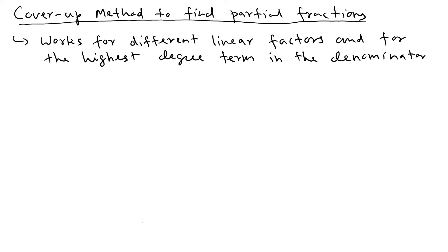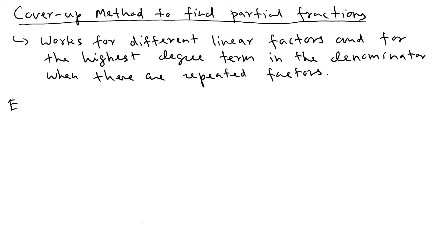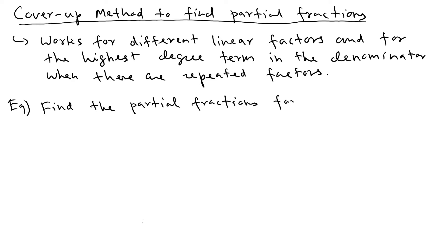It also works for the highest degree term in the denominator when there are repeated factors. So let's look at an example: find the partial fraction decomposition for (2s² + s - 1) divided by s times (s - 1) times (s + 2).